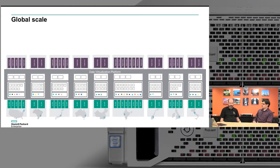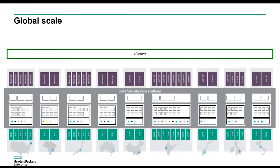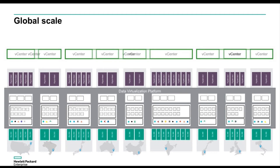Zooming out even further to show a very complex, global environment — you can see many different sites. The two-node sites are probably remote offices; that really big site in India might be DR for every site or just the APAC region. From a management perspective, you could do one vCenter across all of them, which is perfectly valid from a SimpliVity design perspective. Or you might divide it up by region or do a vCenter per site — we support all configurations, whatever works best for the customer.